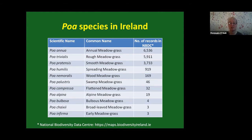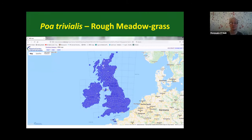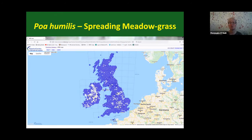The BSBI distribution maps give a good representation of each species. Poa annua is pretty much everywhere in Ireland and Britain. Poa trivialis is also found almost everywhere with only small gaps. Poa pratensis sensu stricto is very common but a little more scattered in Scotland and parts of Ireland, especially around the Midlands. Poa humilis is also more scattered in Ireland than in Britain and the Midlands of Britain as well.